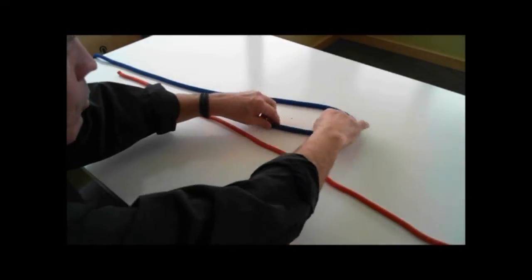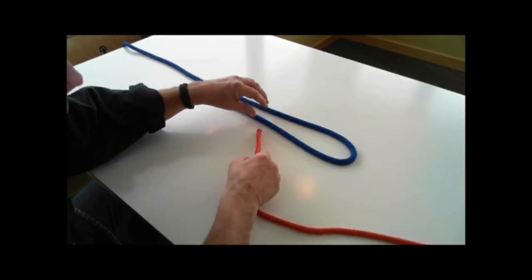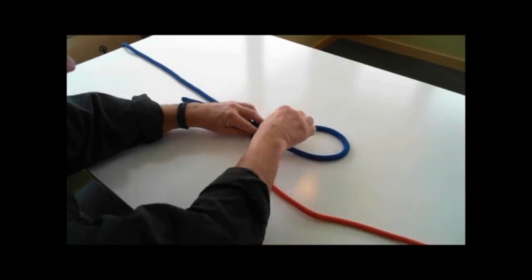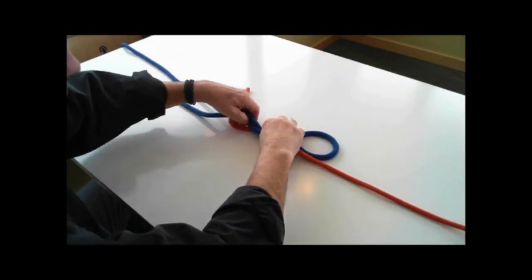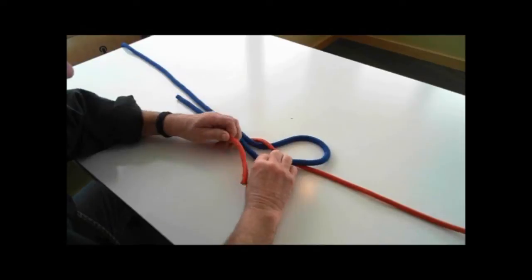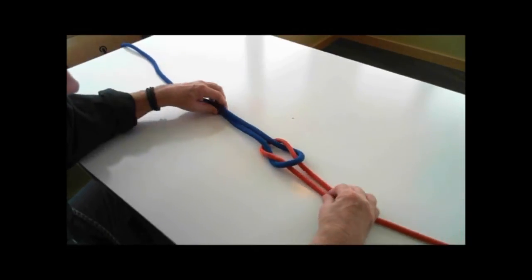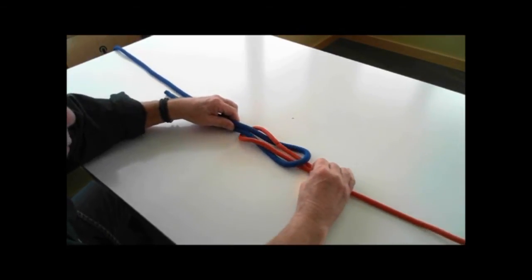So here we have one bite and now to make the other bite, the rabbit comes out of the hole, goes around the back of the tree, and back down the hole. Notice that we have bite on bite, no trap.